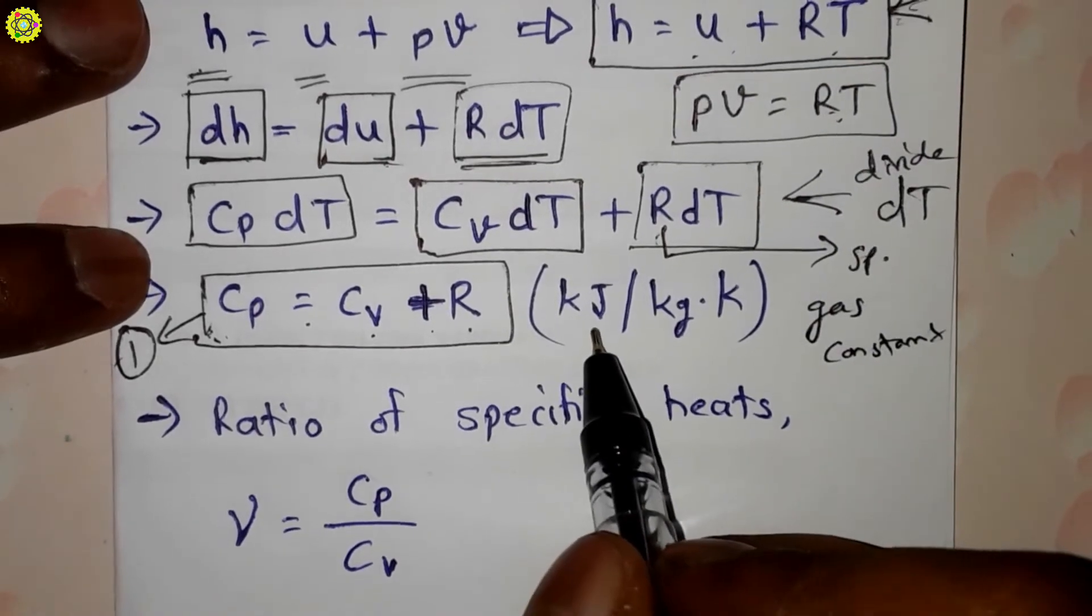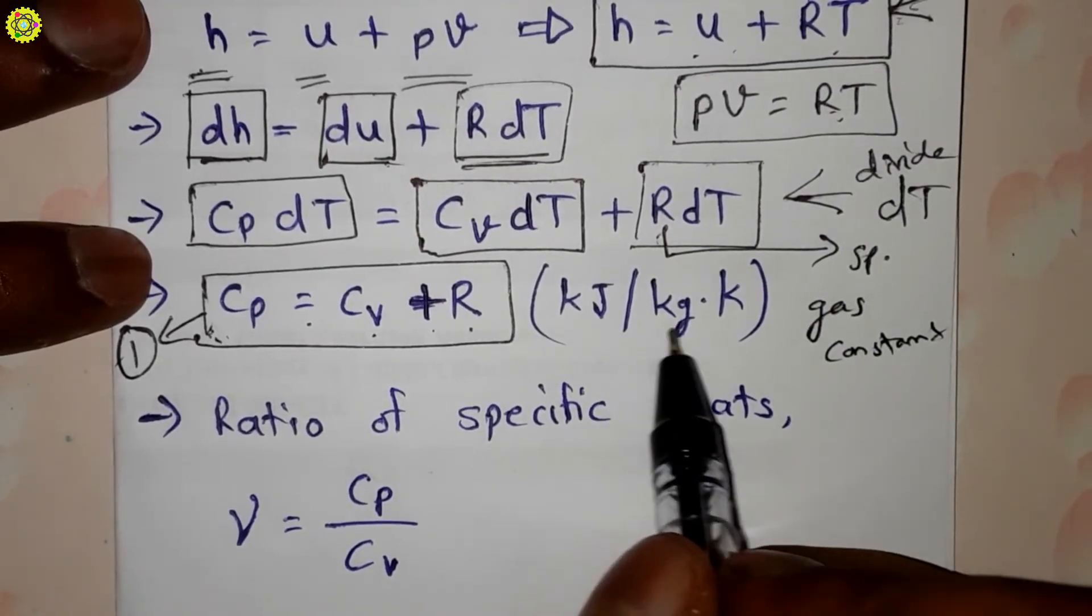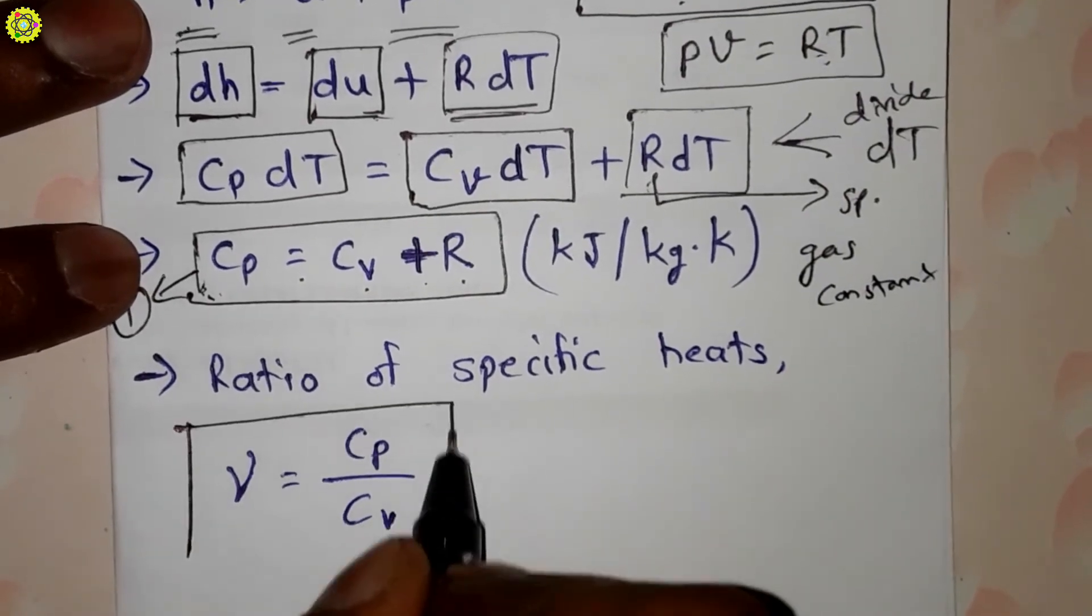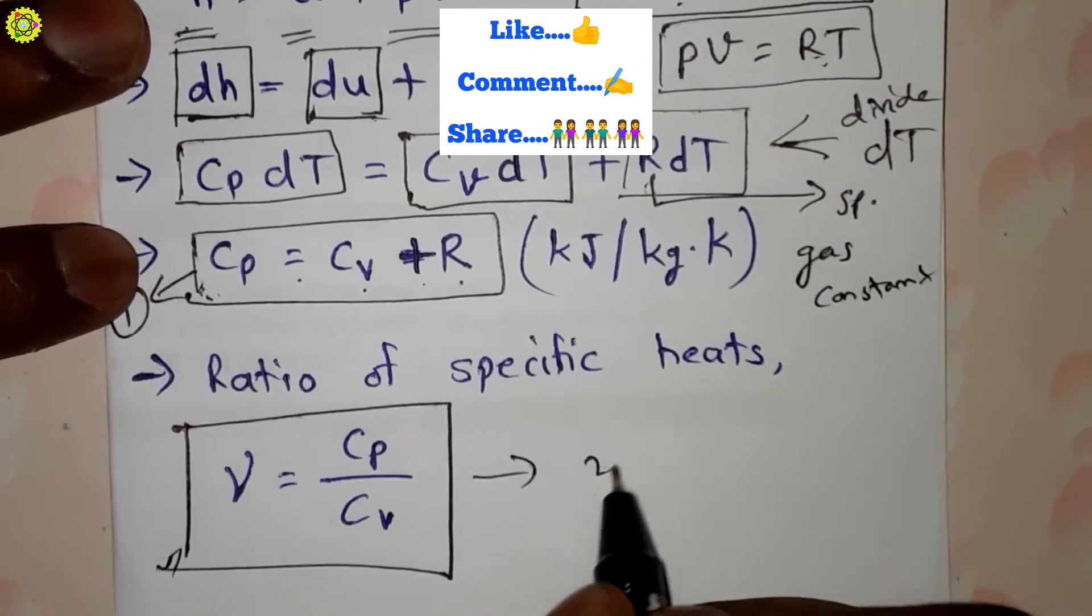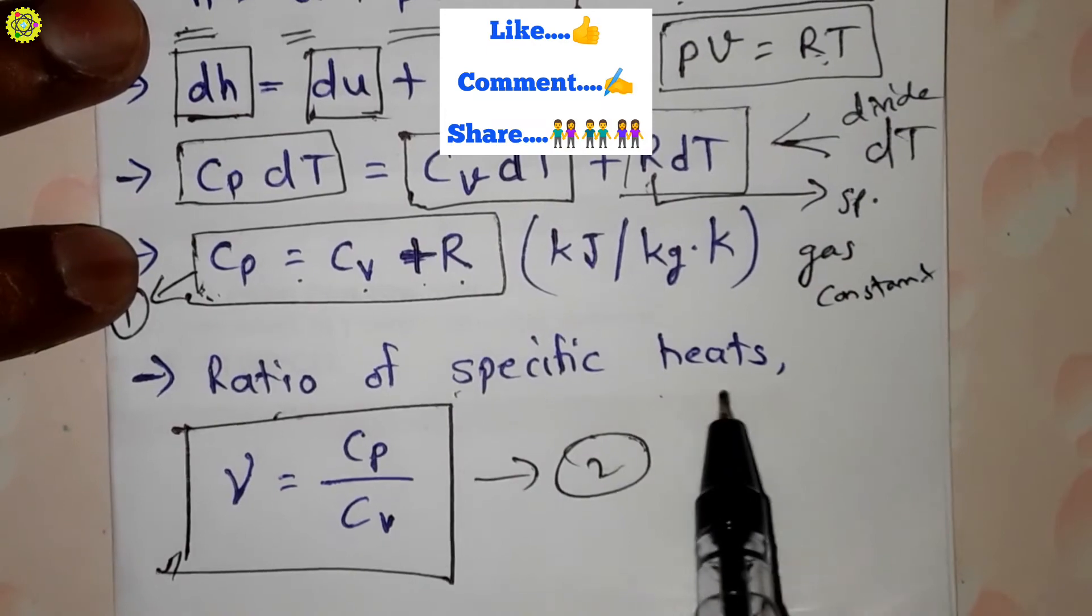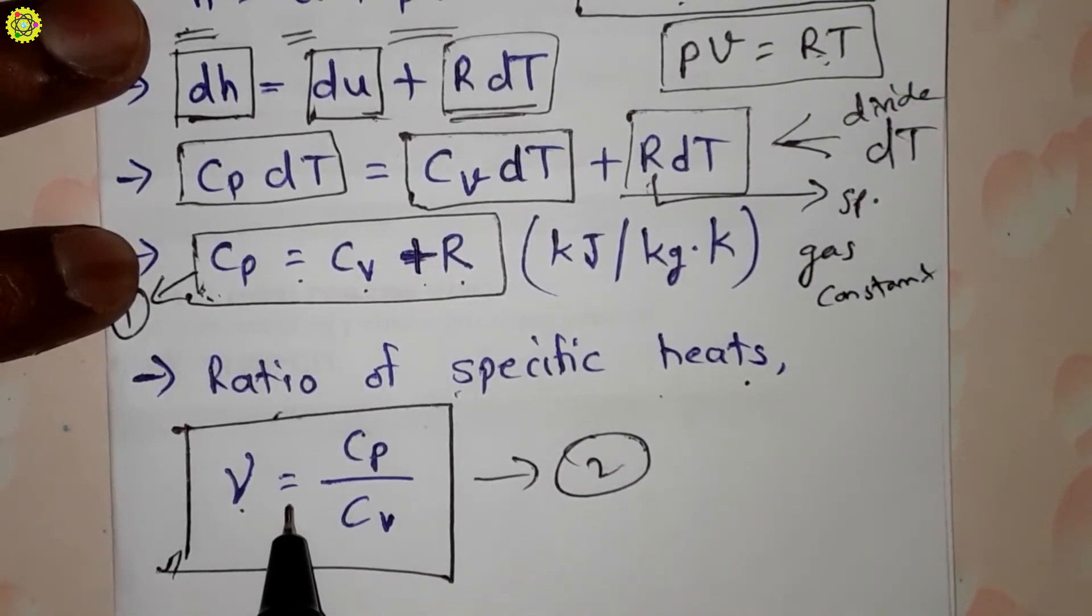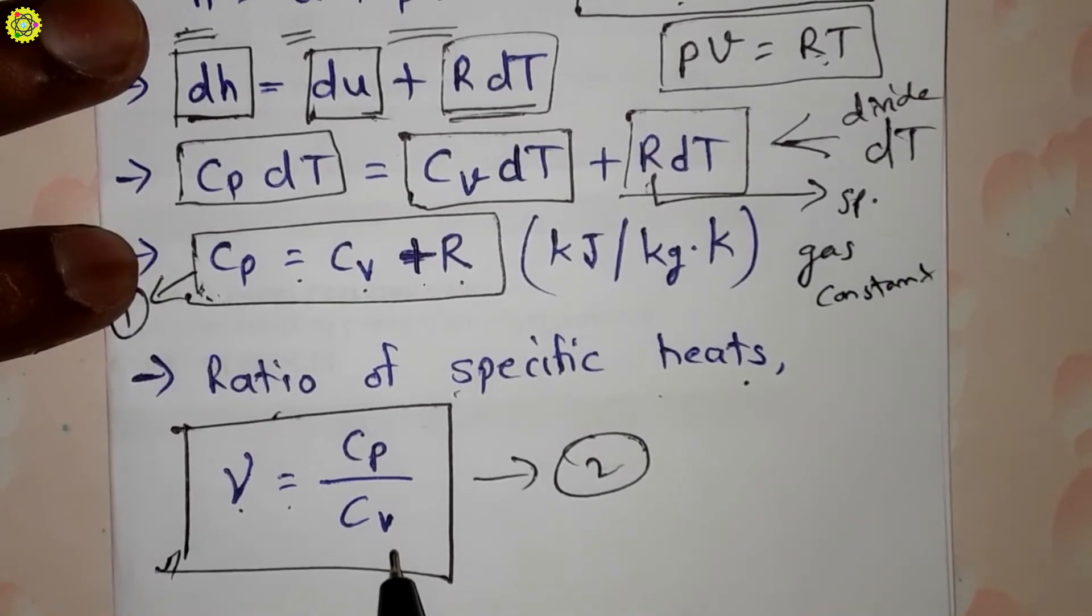Now second, our relationship is this one. This is our second relationship: ratio of specific heats which is denoted by gamma, which equals Cp upon Cv.